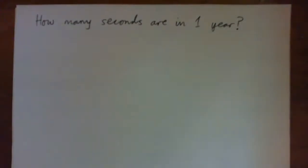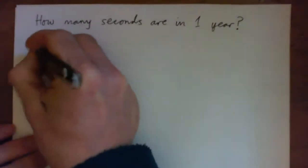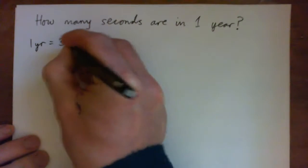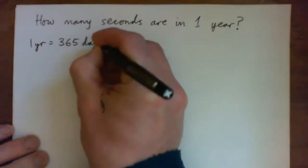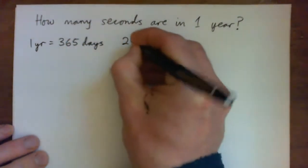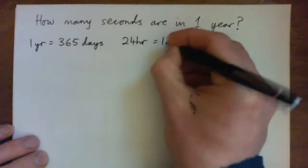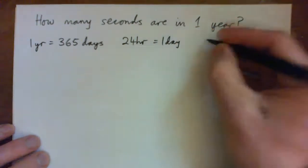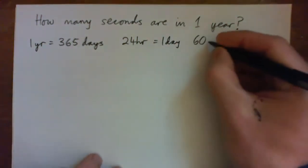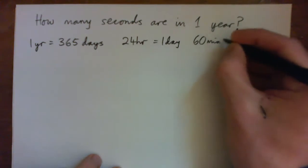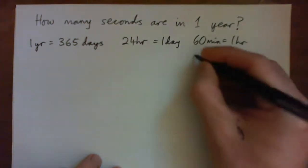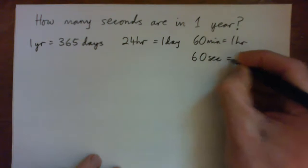Hi everyone, let's figure out how many seconds are in one year. We've got our facts: one year is 365 days approximately, there's 24 hours in one day, 60 minutes in one hour, and 60 seconds in one minute.